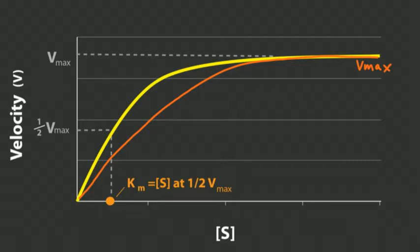With a non-competitive inhibitor, you can't overcome the inhibition by giving more substrate. At some point you saturate the available enzyme and hit zero-order velocity, but when you reach that plateau, Vmax is lower. So non-competitive inhibition decreases Vmax, but it doesn't change KM.